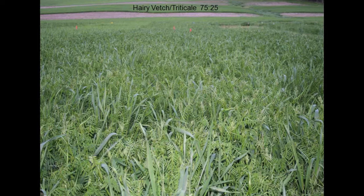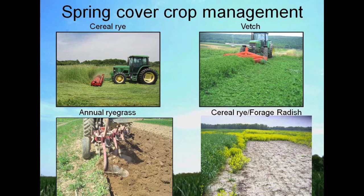Now in the spring we have a nice cover crop — high biomass hairy vetch triticale mixture that we have out on the farm — and now you have to control or kill this cover crop. There are a number of approaches to managing cover crops in organic systems. Both rye and vetch are amenable to rolling or mowing, as we see here.